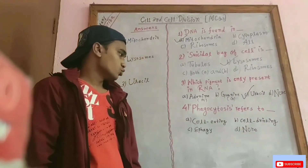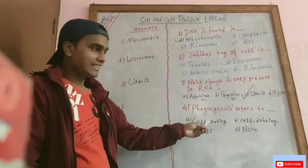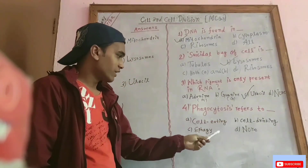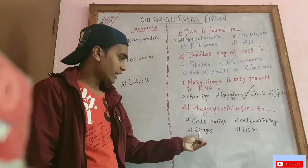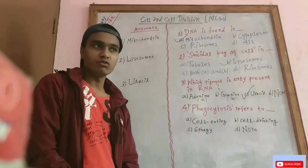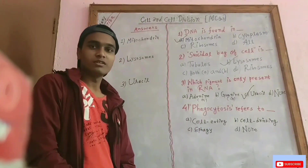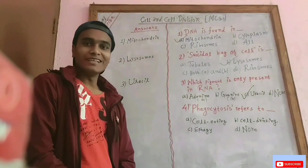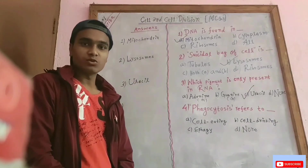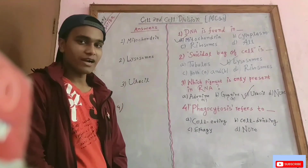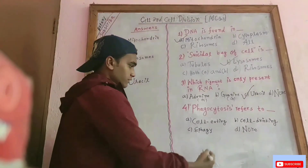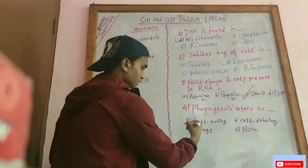Phagocytosis refers to what? Options are: cell eating, cell drinking, or cell vomiting. Since phagocytosis refers to the ingestion of large solid particles into a cell, the answer is cell eating.